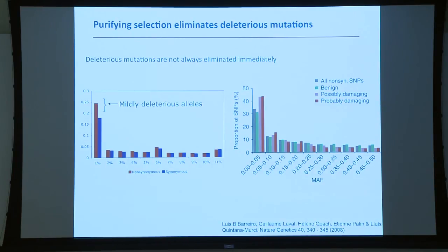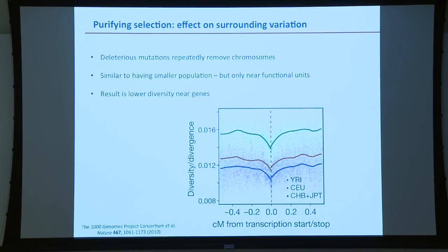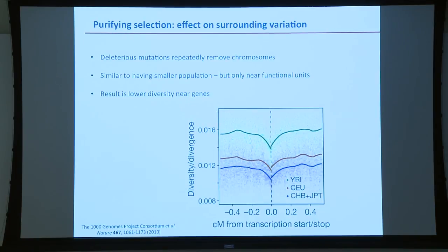There's also an effect called background selection, which happens around genes and other functional elements. Because a gene will repeatedly suffer deleterious mutations that keep getting washed out by natural selection, there's actually a loss of diversity around functional elements. It's analogous to having a smaller effective population size there — you keep losing chromosomes carrying deleterious mutations. In data from African, European, and Asian populations, you characteristically see this dip in diversity near genes.